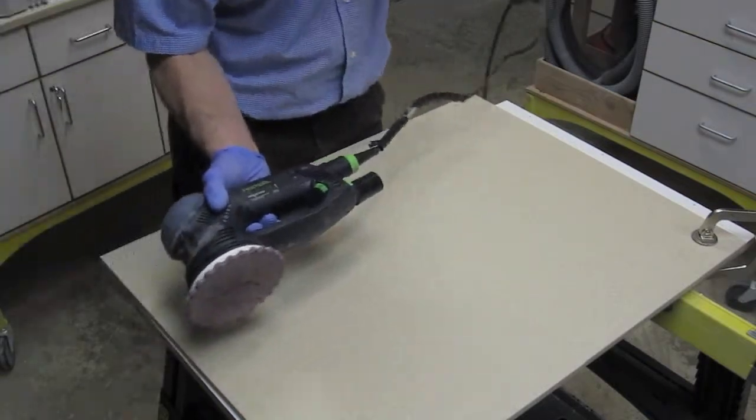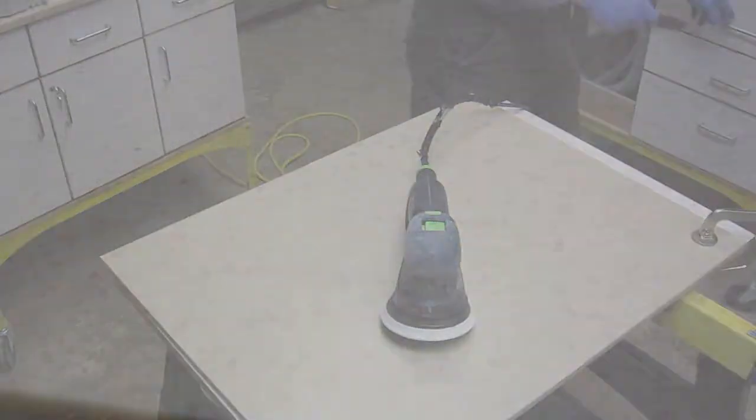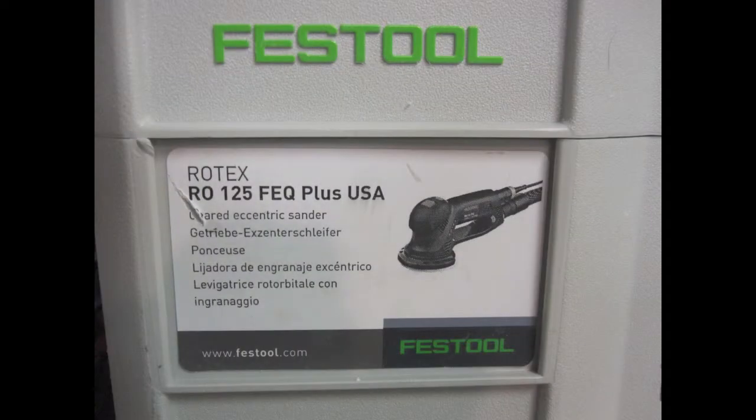The R0125 produces finished work that meets or surpasses the quality of pneumatic random orbit sanders, while being easily portable to an install location. The ease of use and superior dust collection make the Festool the best choice of sanders for solid surface installation.